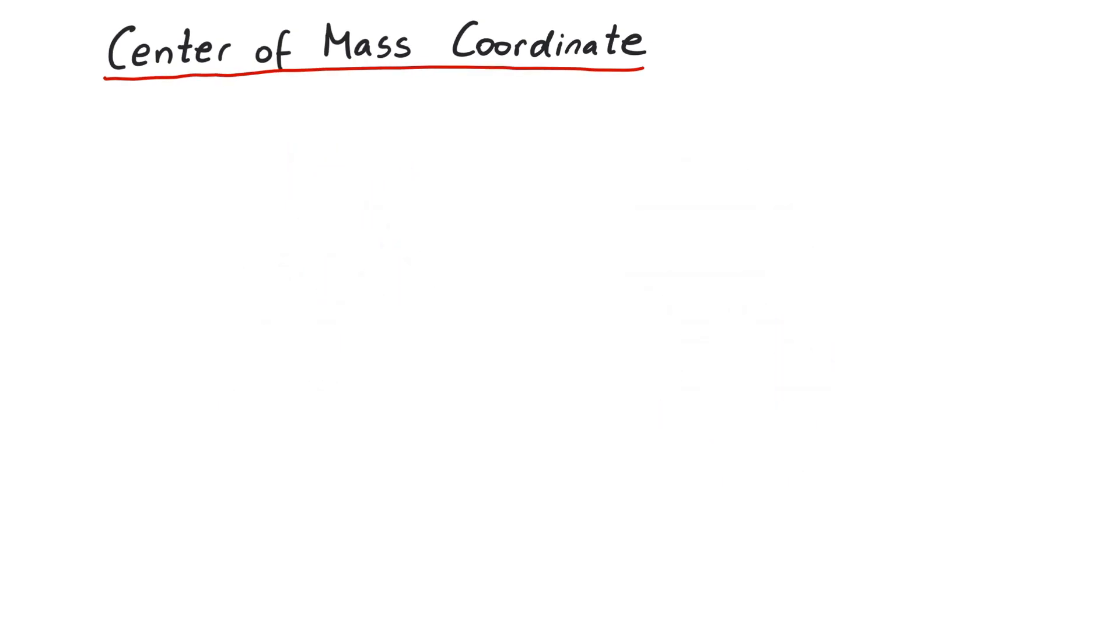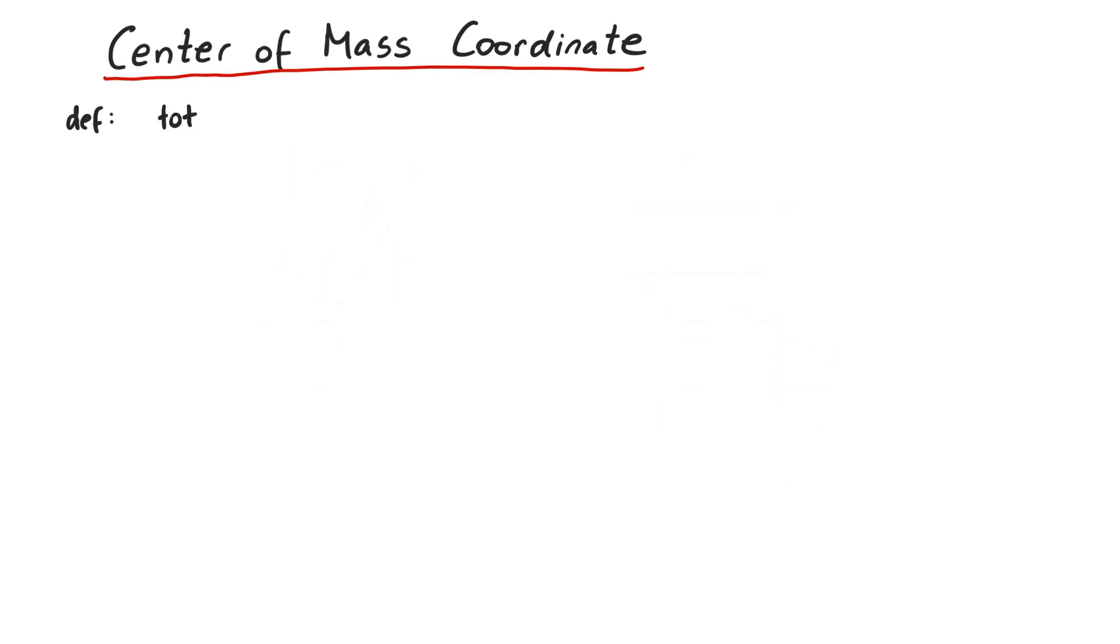Let's start with a simple definition. We define the total mass of the system as the sum over i of all individual masses. This sum goes from 1 to n, depending on how many particles we have. In our example, n is equal to 3.